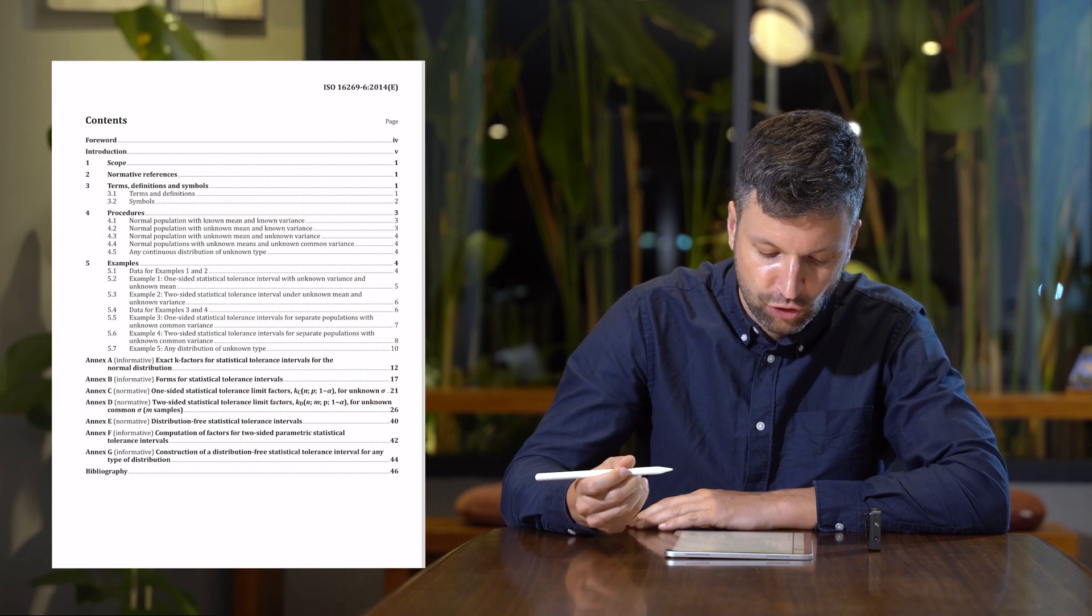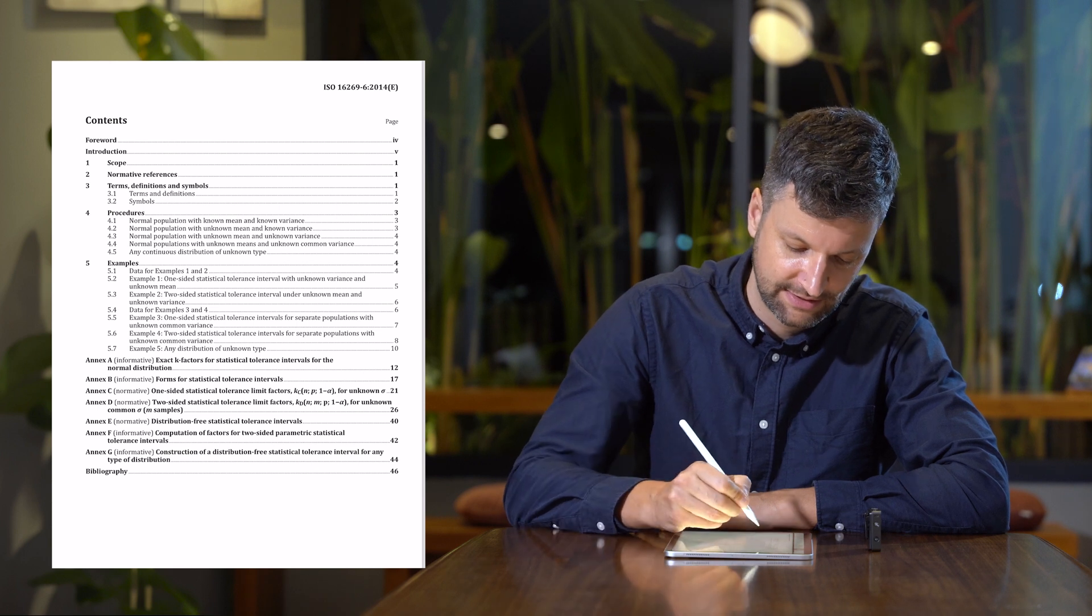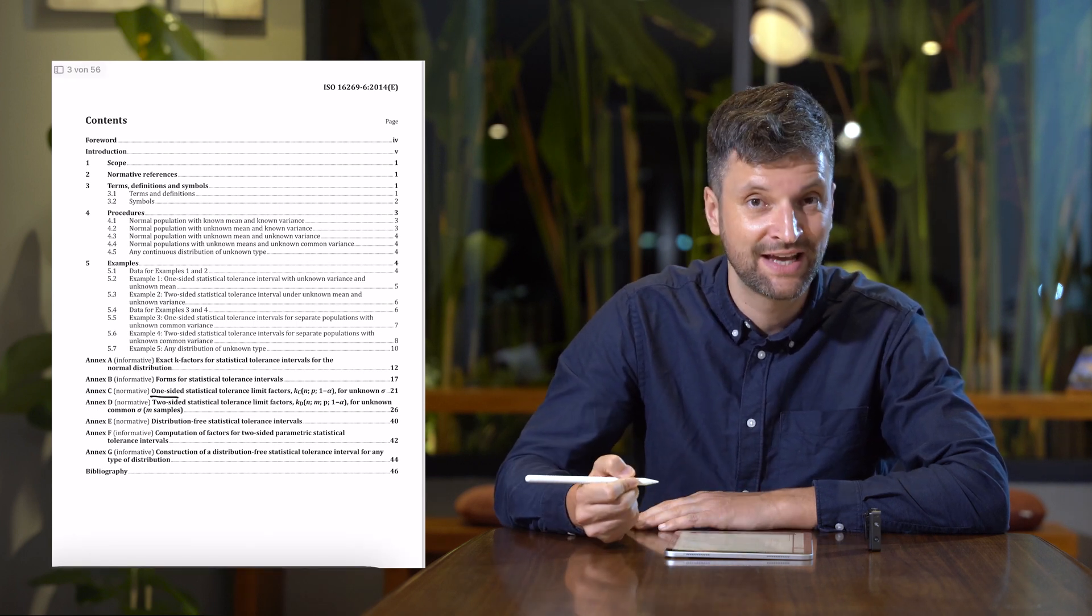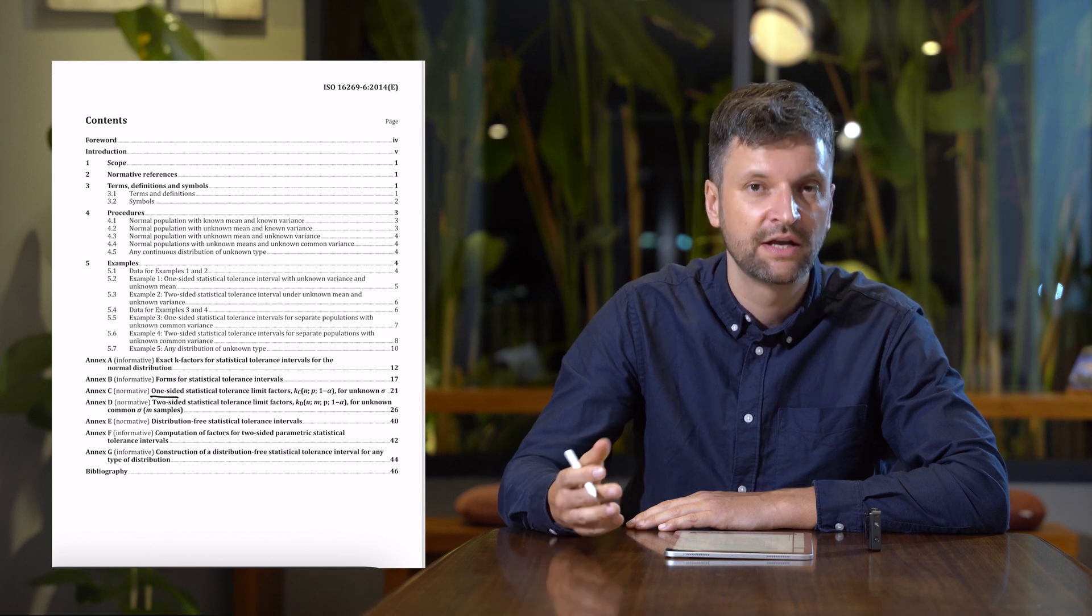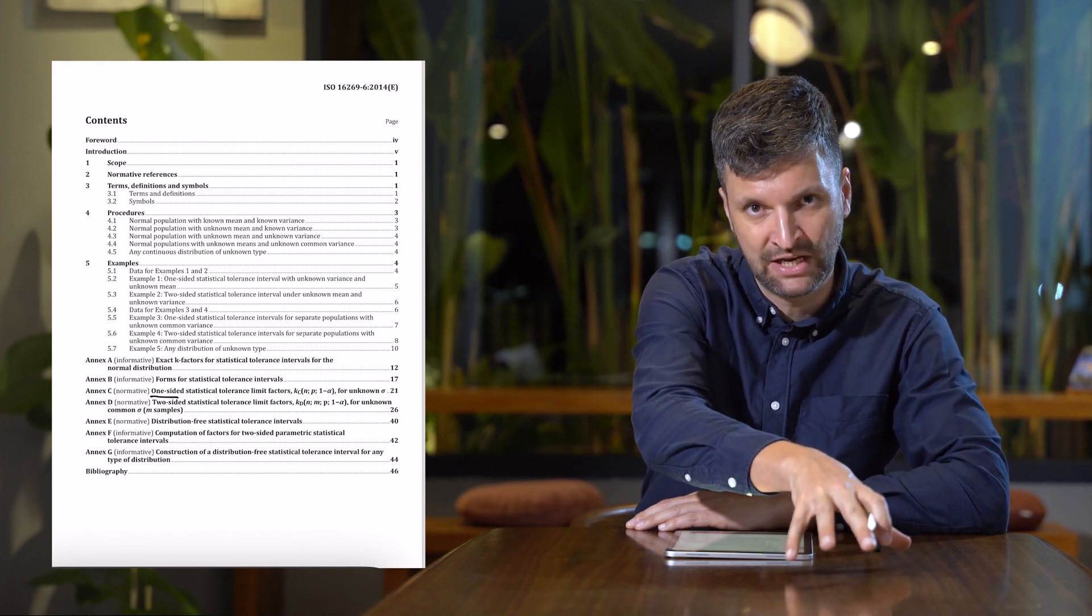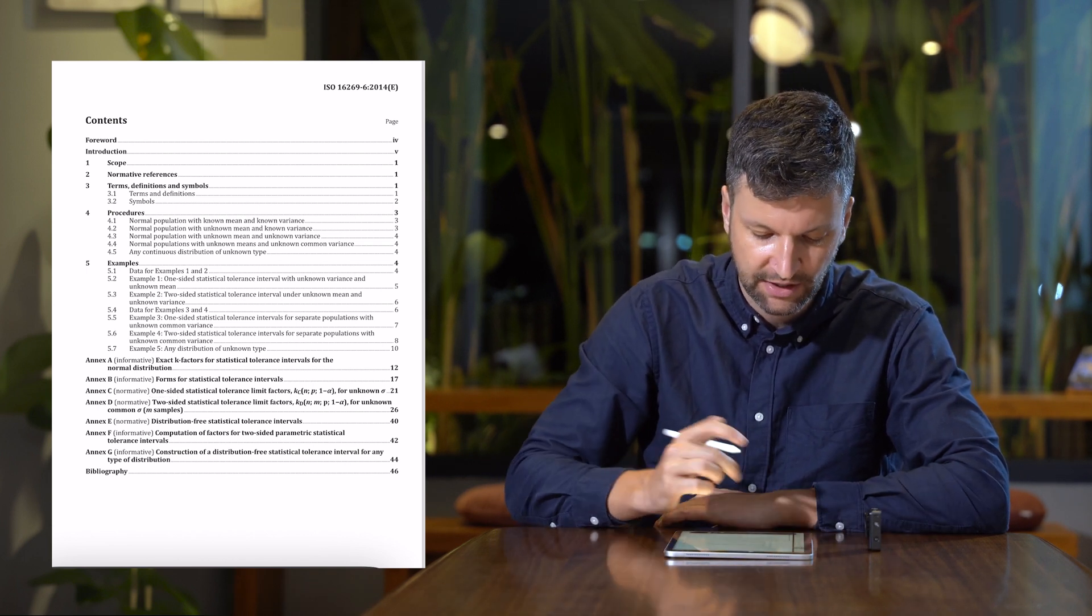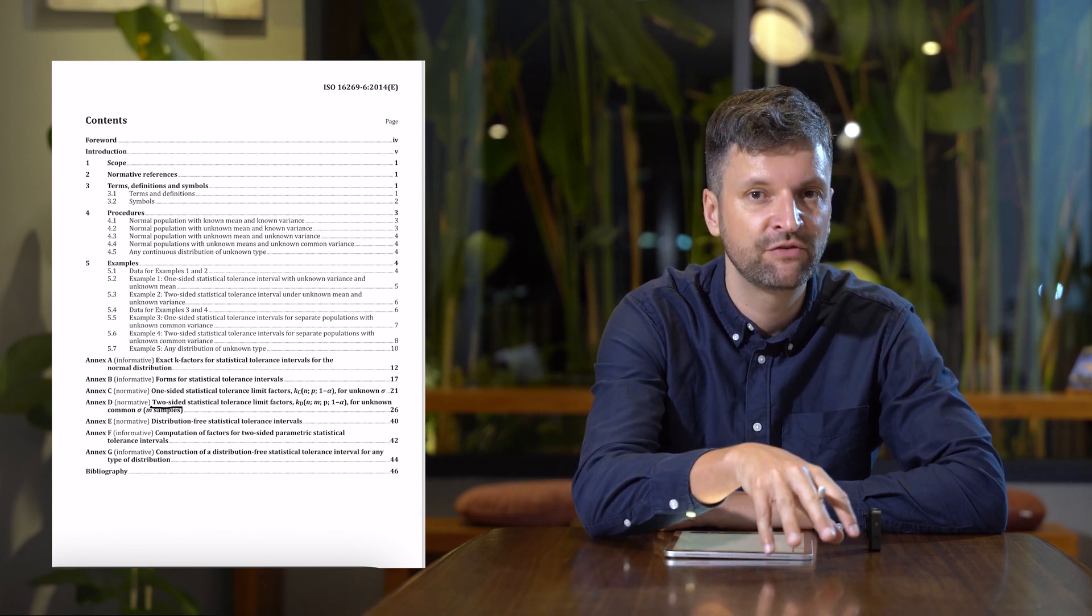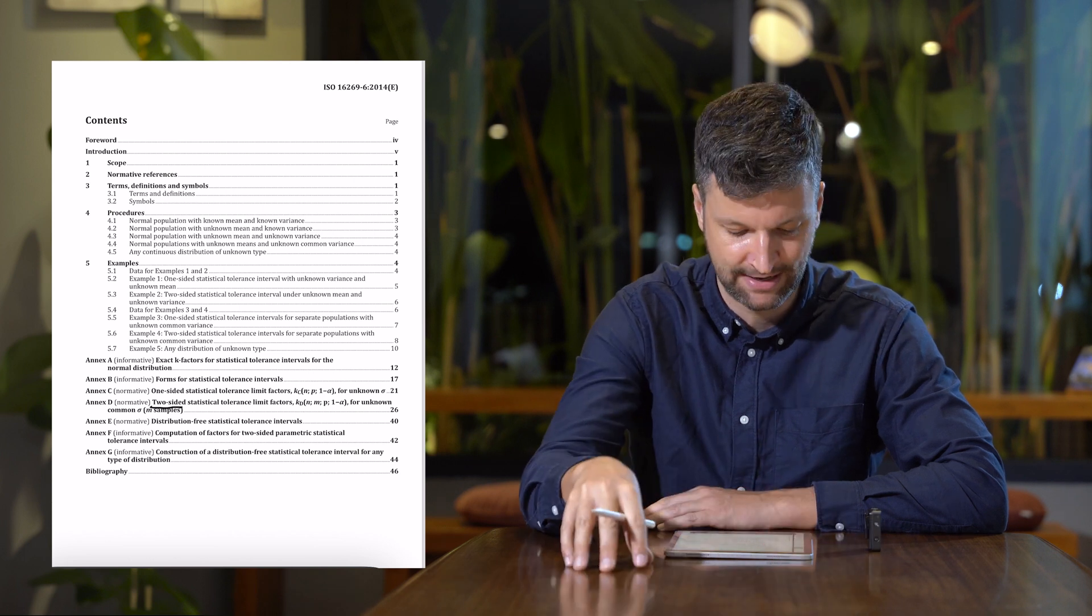we can see that it has two relevant sections for us, which is Annex C, the one-sided statistical tolerance intervals. This is if you either have only a lower limit or only an upper limit, but not two limits. The other option is a two-sided statistical tolerance interval, which is used if you have a lower limit and an upper limit.